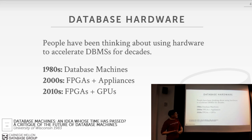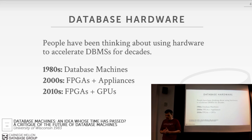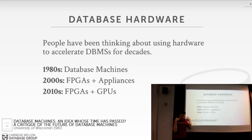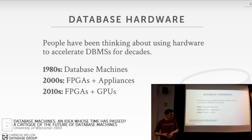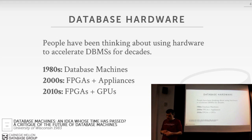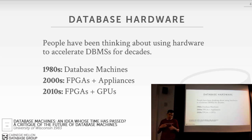Today's class is really about exploring what other types of hardware are out there that we can apply to our database system. We've been focusing on the classic von Neumann architecture — CPU, caches, main memory — and we want to look at new hardware that may not fit that model but could accelerate our database system.